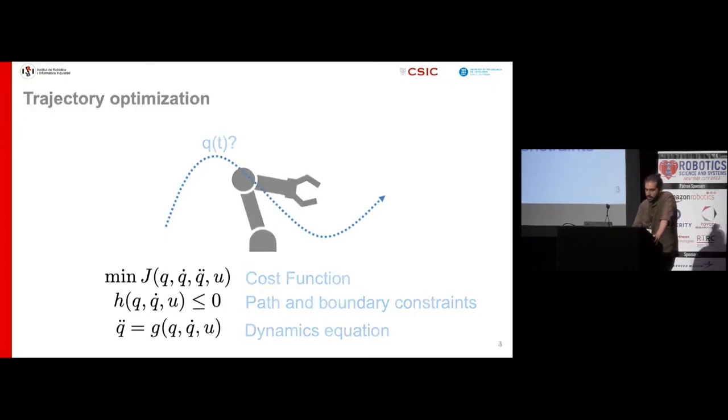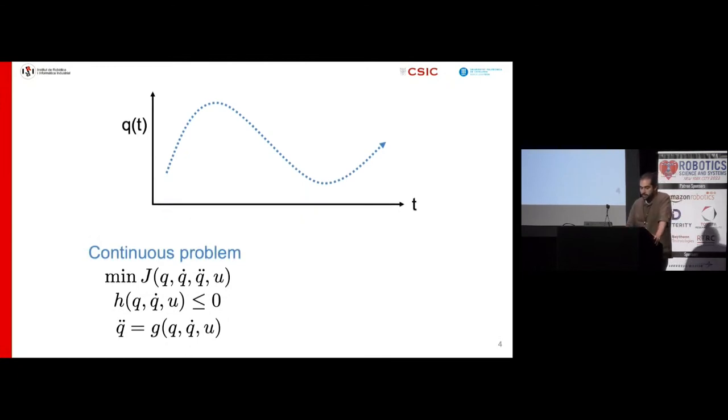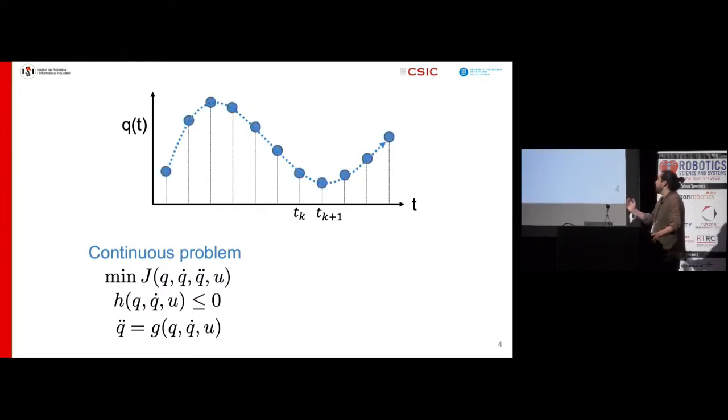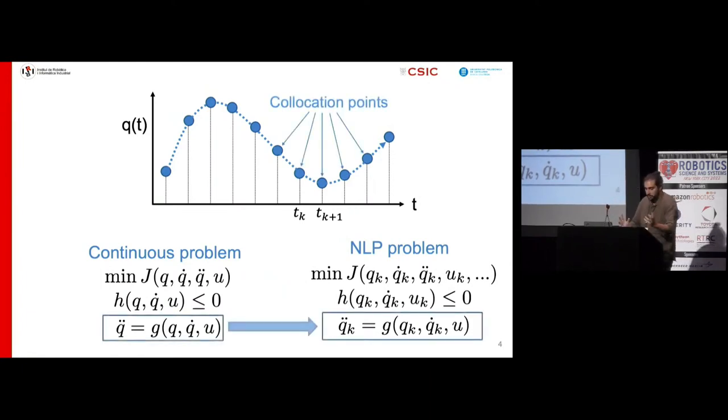To solve this problem numerically, a usual choice is to apply a collocation scheme. This consists in dividing the time domain into intervals and applying a quadrature rule to each interval to transcribe the continuous problem into a nonlinear programming one. This is done by imposing the constraints at a set of collocation points. The crucial part of this process is how to transcribe the continuous dynamics equation into its discrete counterpart, and this is the focus of our work.